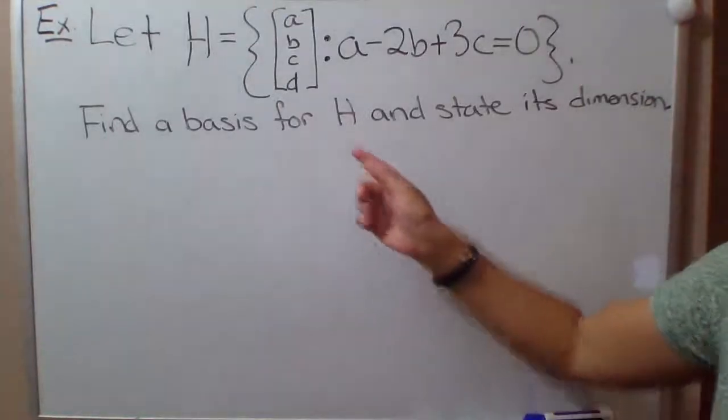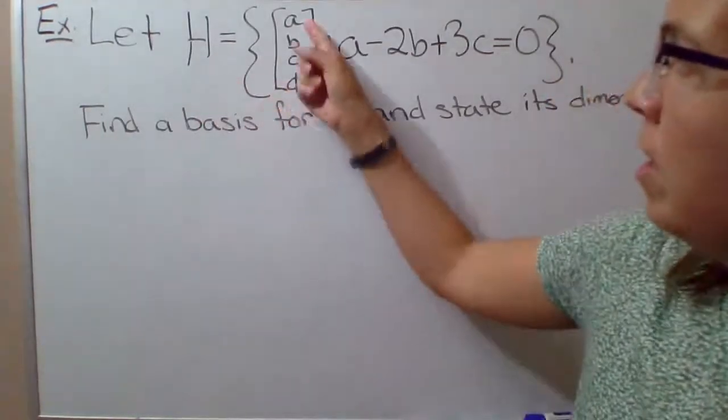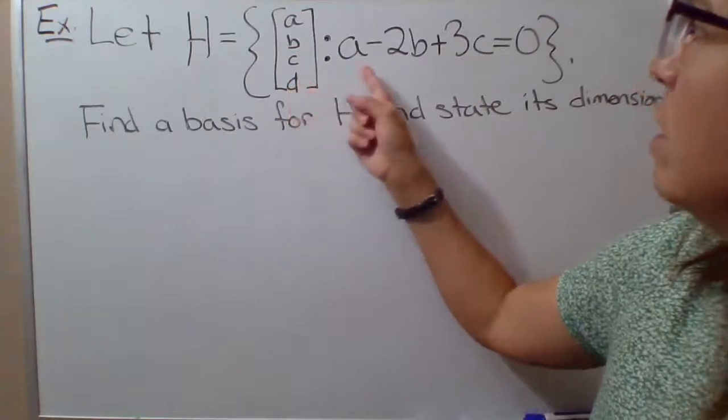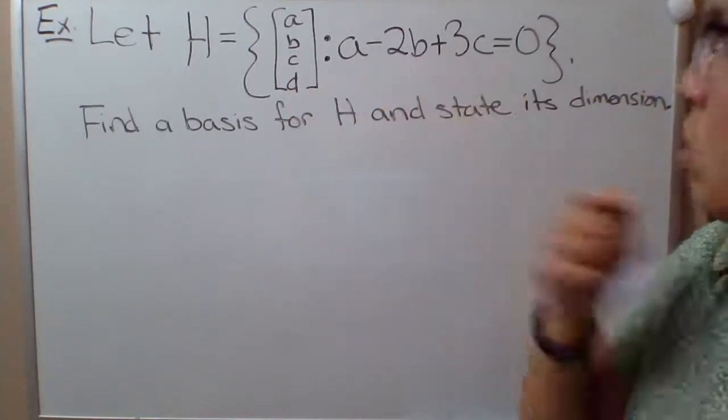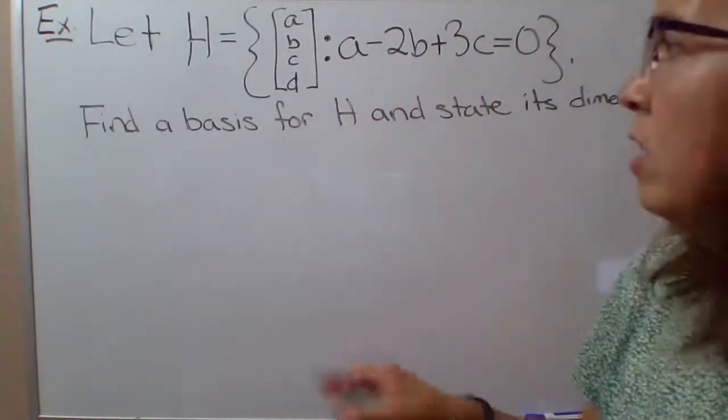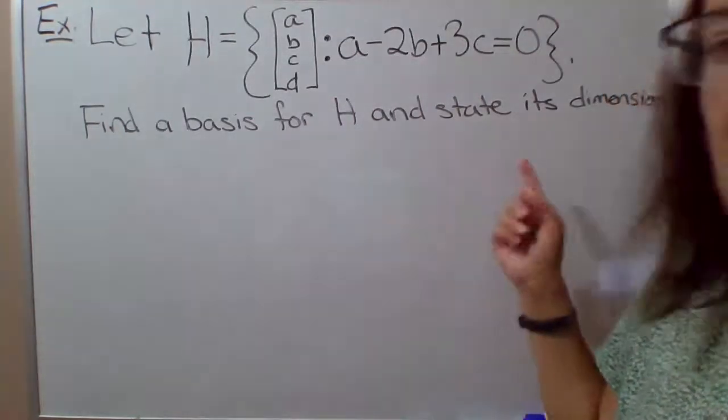So in this example, we've got a subspace of R4 defined as the collection of all vectors ABCD, such that A minus 2B plus 3C equals 0. So we've got this condition on the entries of the vector there. And our task is to find a basis for H and then state its dimension.